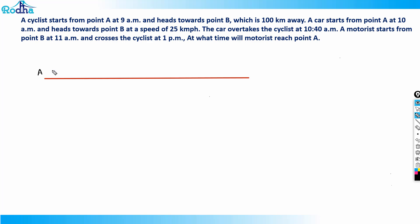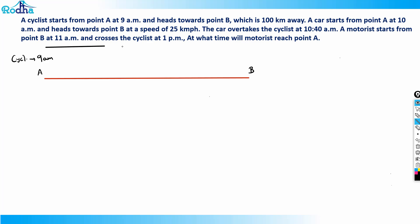It says that a cyclist starts from point A at 9 am, heading towards point B which is 100 kilometers away. So this distance here is 100 kilometers — the cyclist is starting from here and the distance is 100 km.